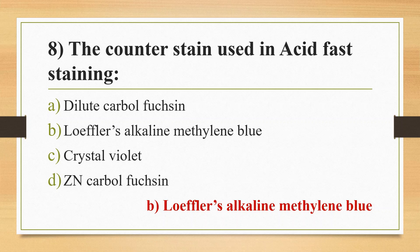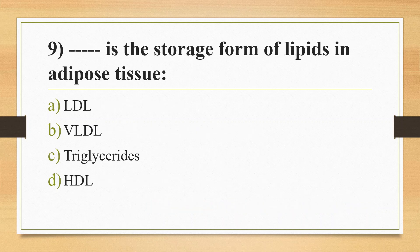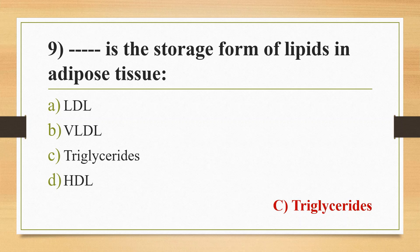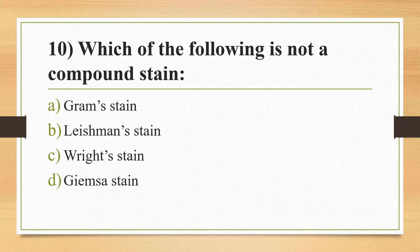Question 9: Blank is the storage form of lipids in adipose tissue. Option A: LDL. Option B: VLDL. Option C: Triglycerides. Option D: HDL. Answer is Option C, Triglycerides. Triglycerides are the storage form of lipids in adipose tissue. LDL is low density lipoprotein — bad cholesterol. VLDL is very low density lipoprotein. HDL is high density lipoprotein — good cholesterol — because it transports lipids to the liver, thereby eliminating lipids from the bloodstream.